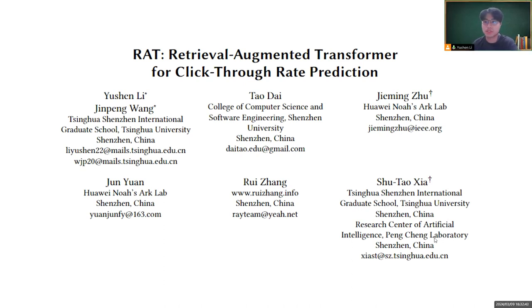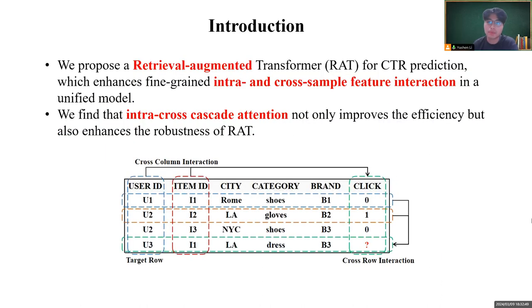Hello, this is my presentation for the short paper RAT: Retrieval Augmented Transformer for Click-Through-Rate Prediction. We propose a Retrieval Augmented Transformer RAT for CTR prediction, which enhances fine-grained intra- and cross-sample feature interaction in a unified model.